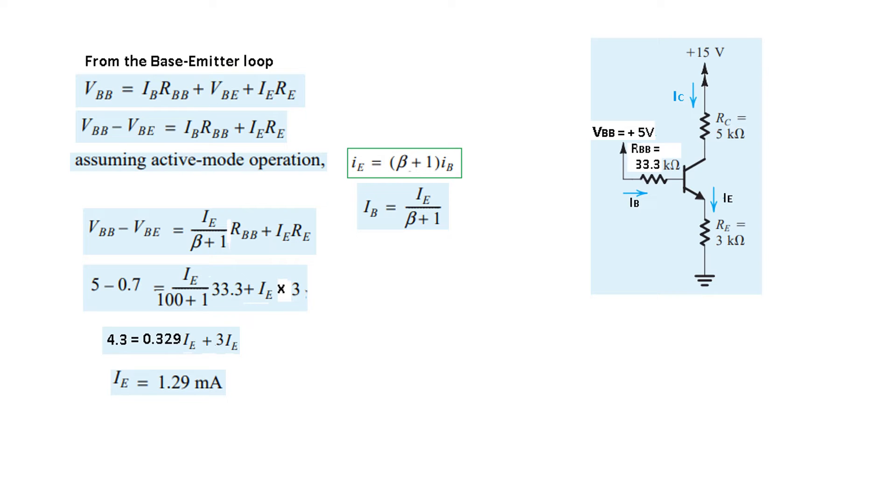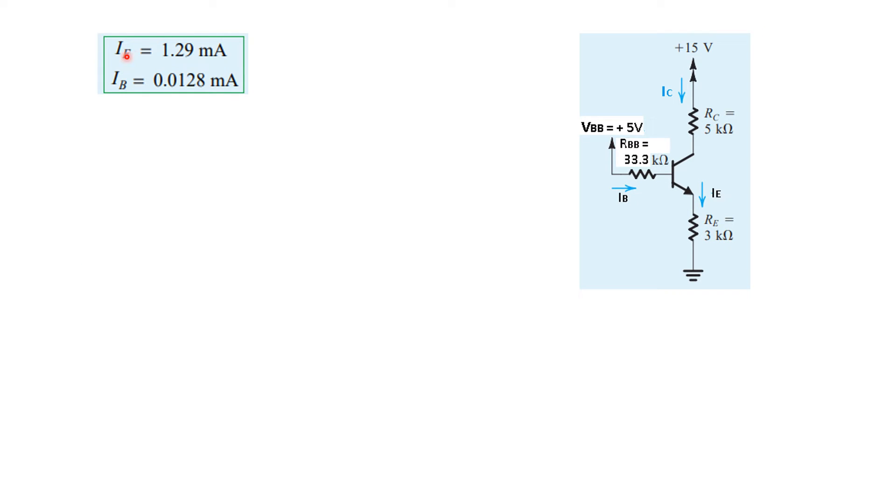Once we have calculated Ie, we can find Ib, Ic, etc. The base current Ib = Ie/(β+1) = 1.29/(101) = 0.0128 milliamperes. Now we have found Ie and Ib, these currents in the circuit.